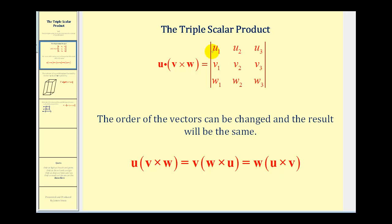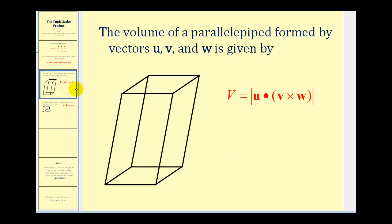One application of this triple scalar product is the volume of a parallelepiped formed by vectors u, v, and w, given by the absolute value of this triple scalar product, where the three vectors form the edges of the parallelepiped.